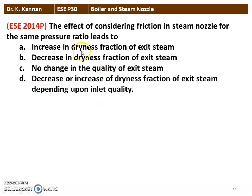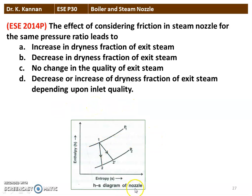Next question from the 2014 question paper on steam nozzle: the effect of considering friction in the steam nozzle for the same pressure ratio leads to — increase in dryness fraction, decrease in dryness fraction, or change depending on inlet quality? Looking at the H-S diagram of the nozzle, process 1 to 2 is isentropic expansion and 1 to 2' is actual expansion due to friction. The dryness fraction x₂' is higher than x₂, so friction causes an increase in the dryness fraction of the steam.